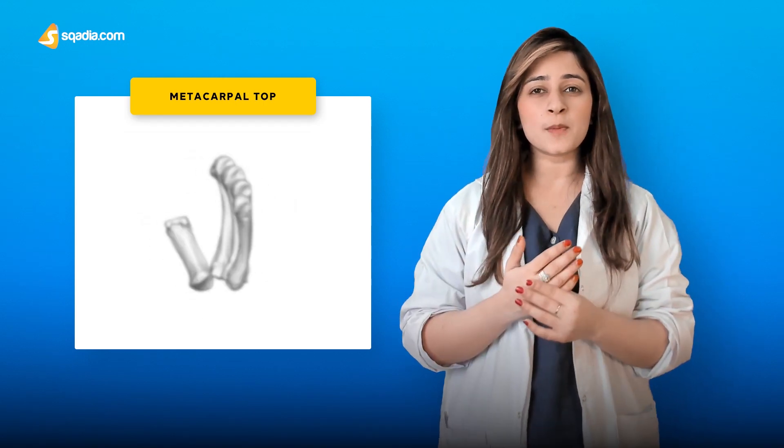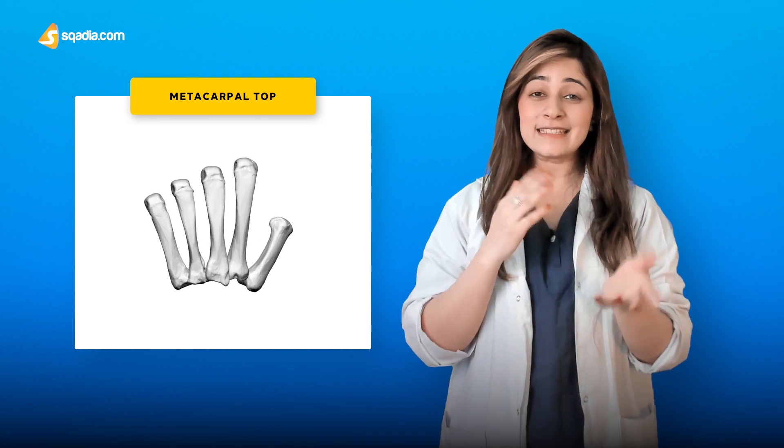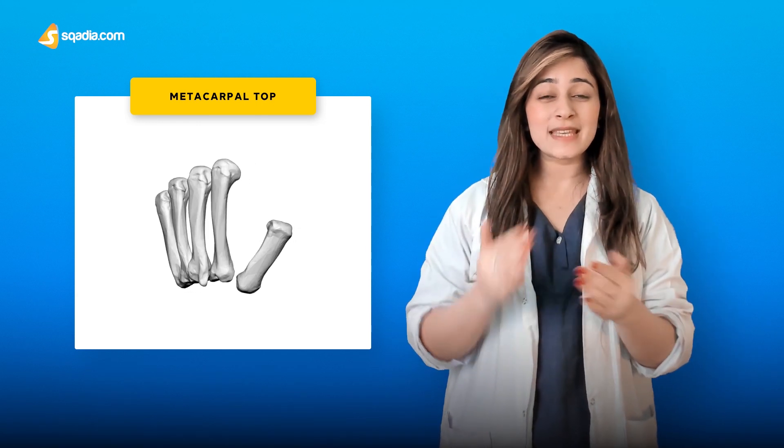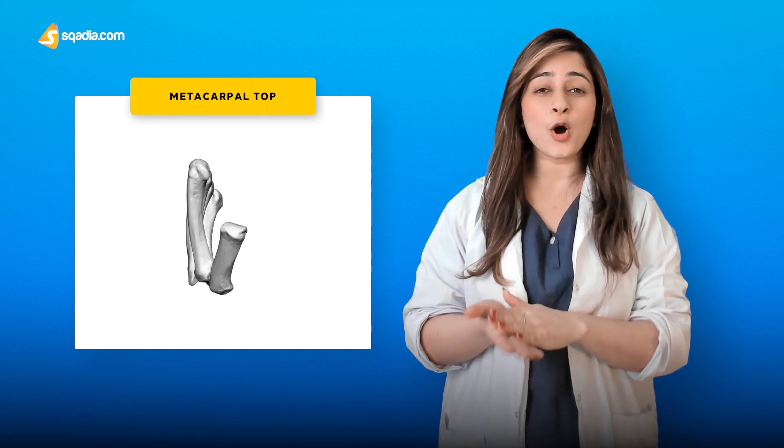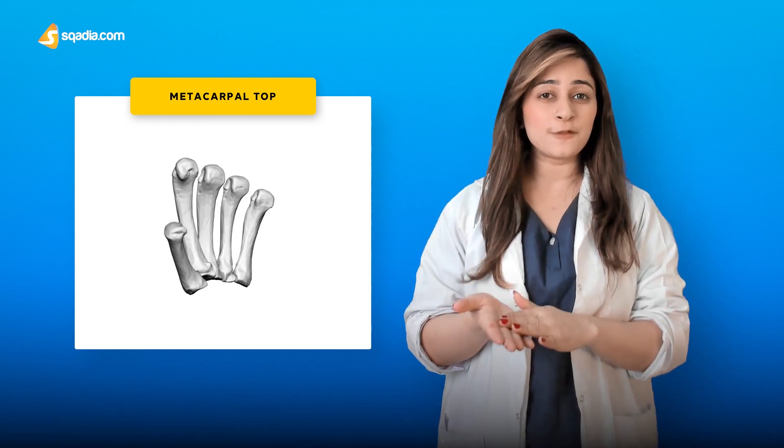The top of the metacarpals form the knuckles. Connective tissue covers them on the palmar surface. You can feel and see the metacarpals on the backside of your hand through your skin — you can palpate them very easily.